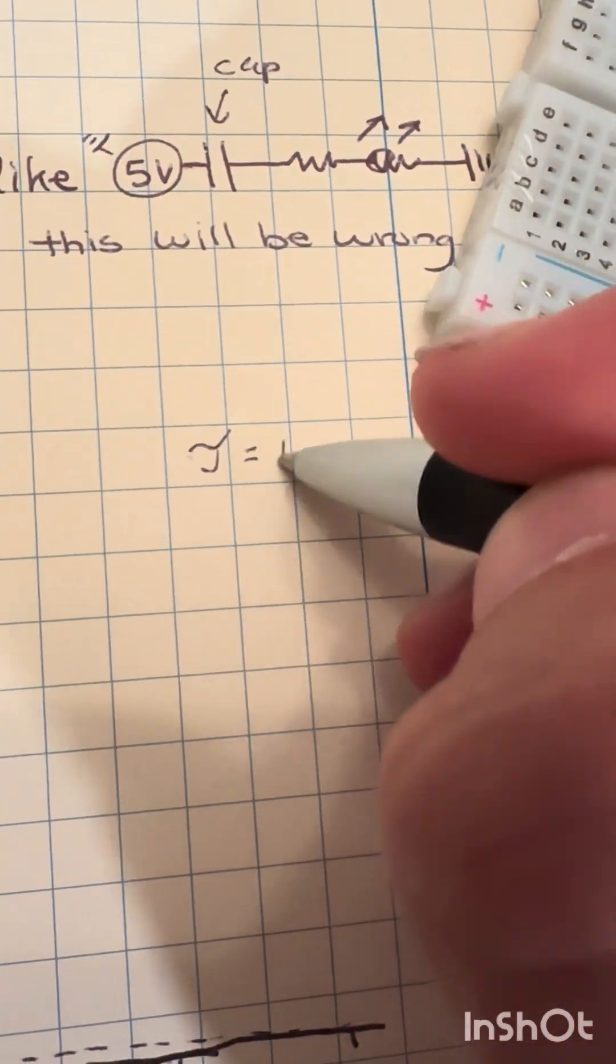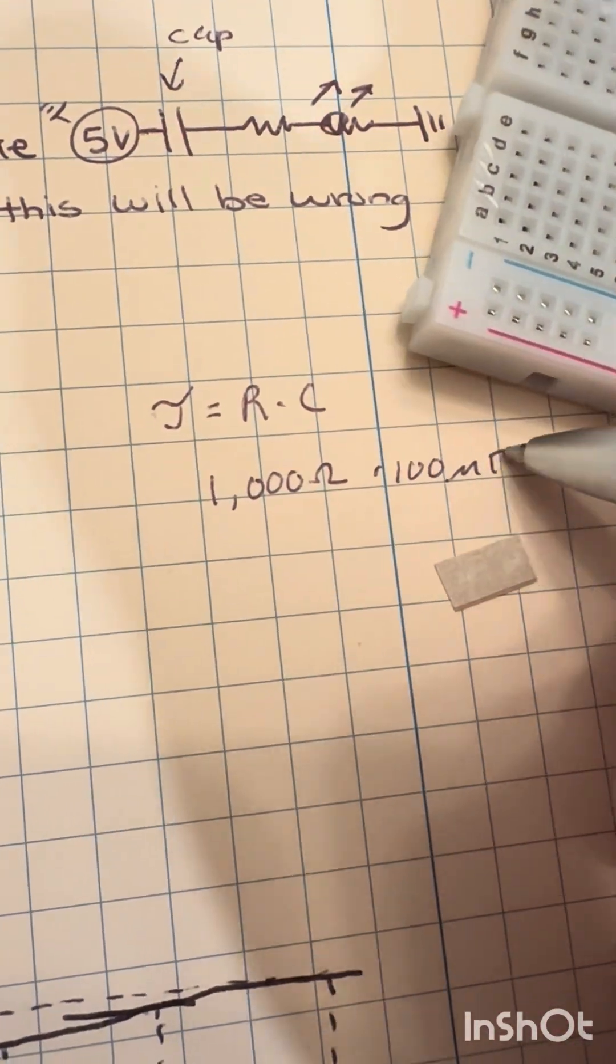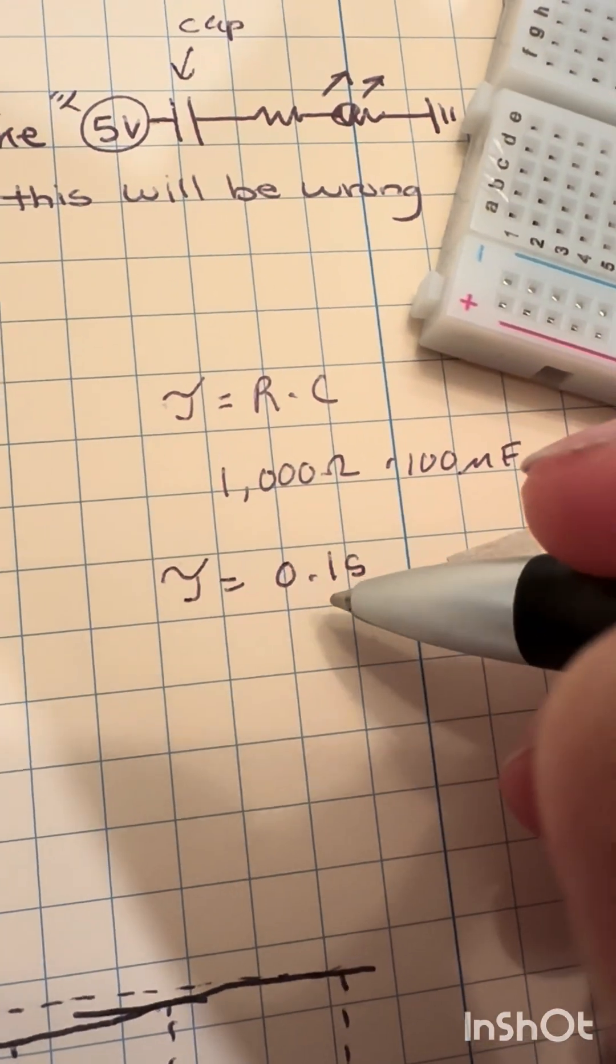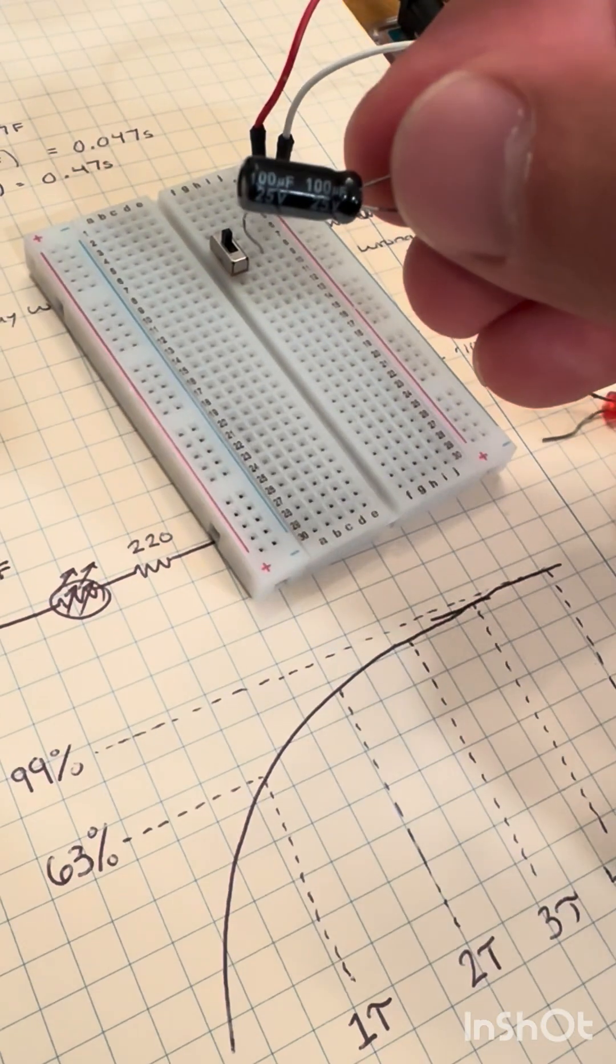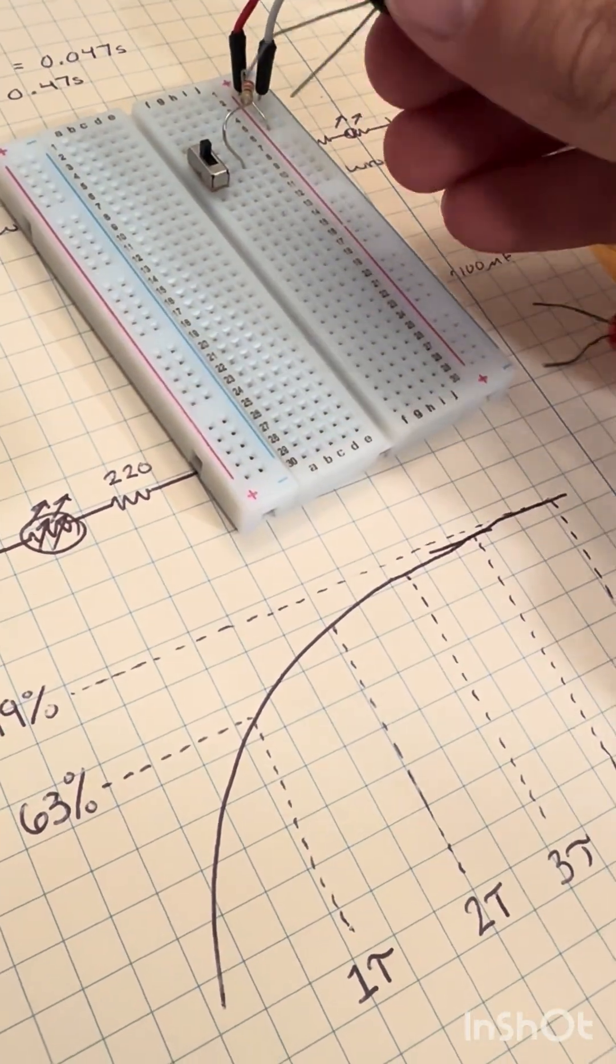Now let's add in a capacitor to have this hold charge when it's not being supplied power. If we treat the capacitor similar to a resistor and put it in series after the switch,